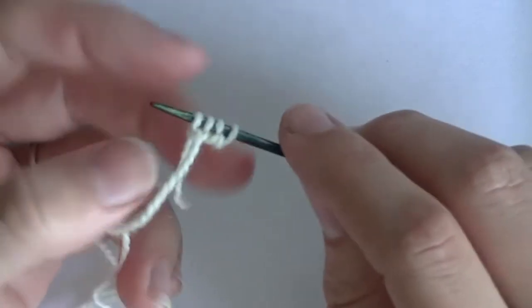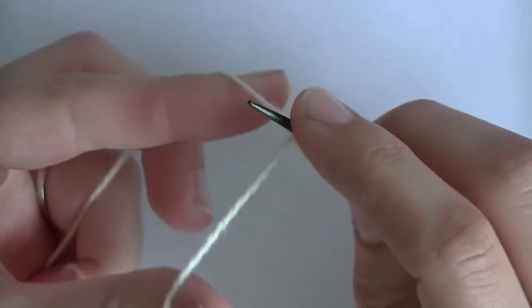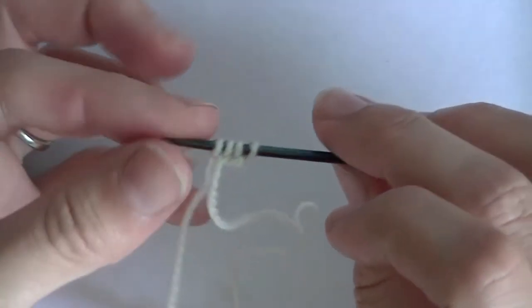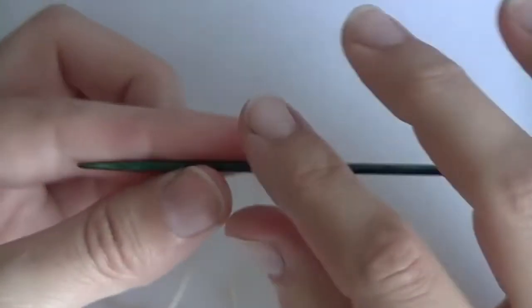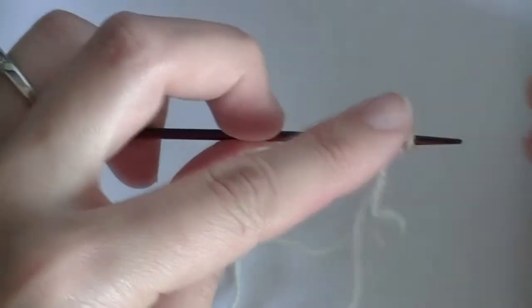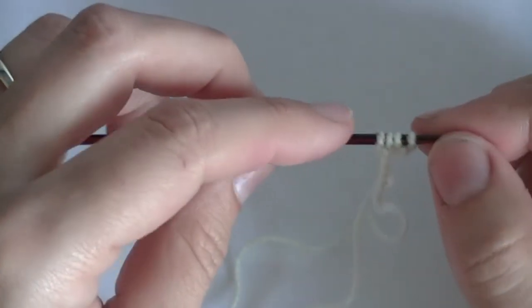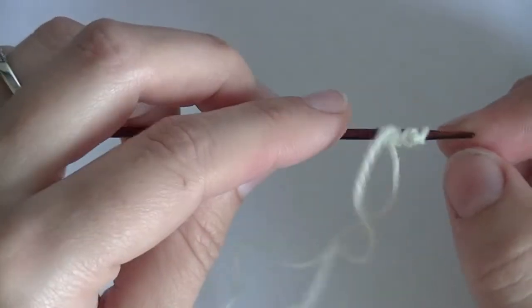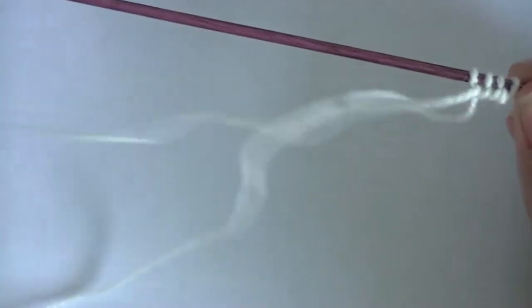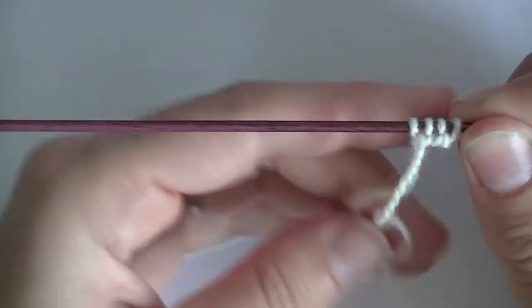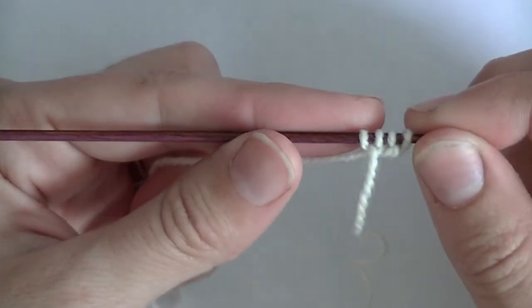And I've already casted on and so I'm right at the end of the needle where I would be if I was going to add more stitches. So what I'm going to do is I'm going to slide my yarn to the right side of the needle.